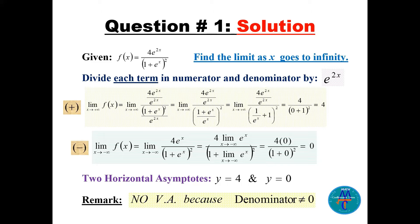Taking the limit as x goes to positive infinity: e^(infinity) is infinity, so 1/infinity is 0. We get 4 over (0 + 1)^2, which equals 4.